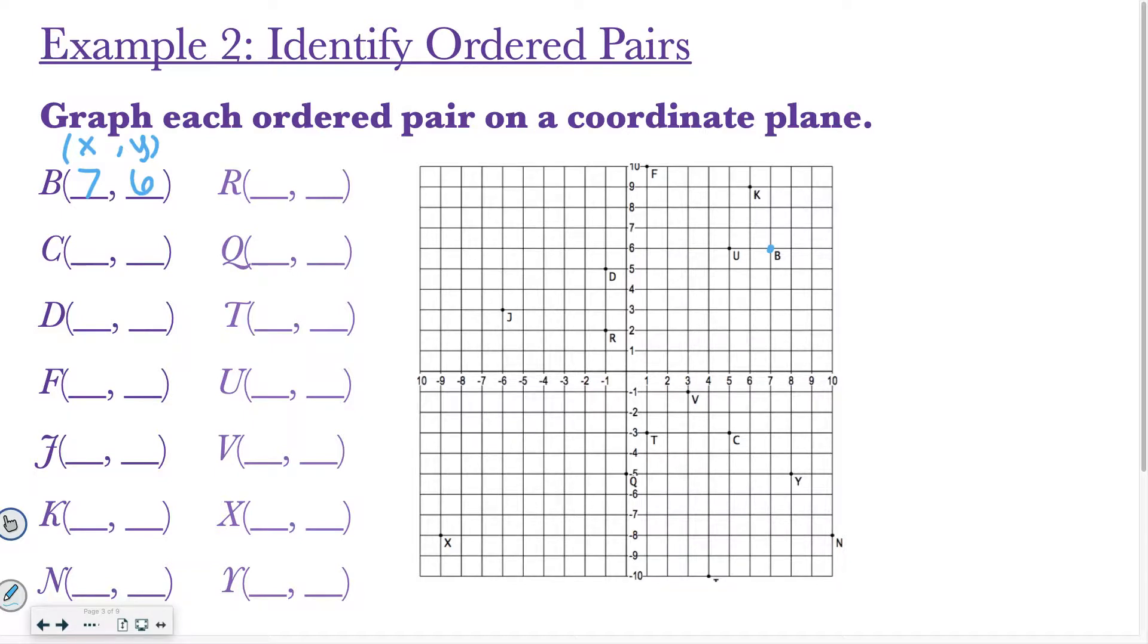If I look for point R, I see that's right there. I went negative 1 in the x direction, and I went positive 2 in the y direction. Point C is right here. That's 5 in the positive x direction, and I went down 3, so negative 3 in the y direction.